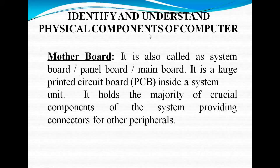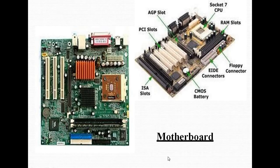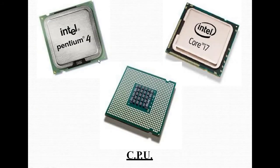Let us identify and understand the physical components of a computer. First is the motherboard, also called system board, panel board, or main board. It is a large printed circuit board (PCB) inside a system unit that holds the majority of crucial components and provides connectors for other peripheral devices. CPU chips include Intel Pentium 4 and Intel Core i7, which serve as the central processing unit.